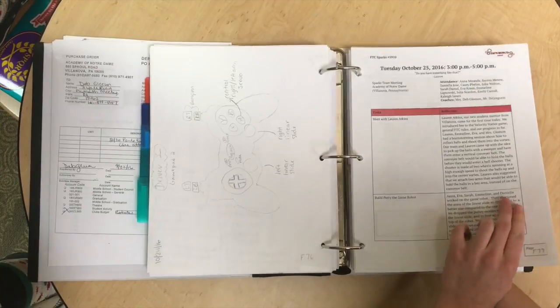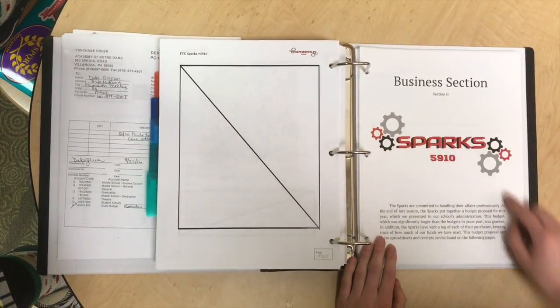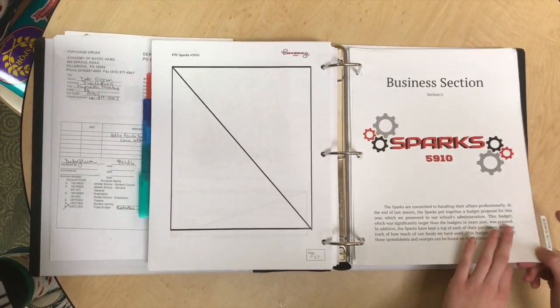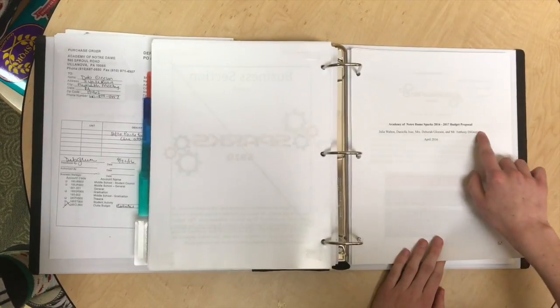The last section of the notebook should be one of three things: a business plan, a strategic plan, or a sustainability plan. Our business plan is laid out by a budget proposal we presented to our school at the beginning of the season.